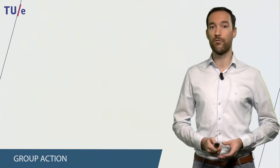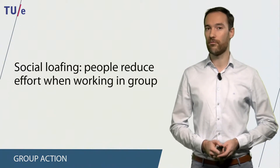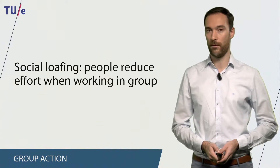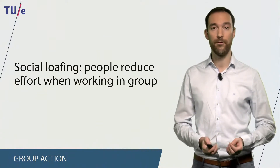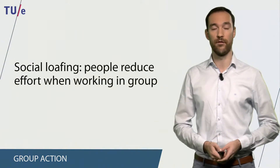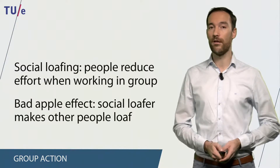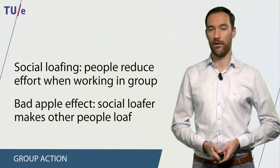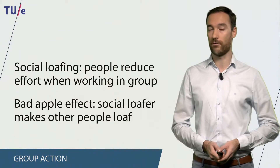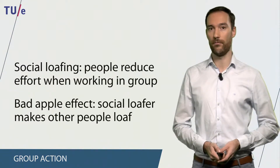Another theory that explains group behavior is social loafing. This means that people tend to reduce their effort when they are working in a group. So when you are doing a task by yourself, you are more likely to put in more effort compared to when you are doing it together with other people. Social loafing could lead to the bad apple effect, which essentially means that if you have one social loafer in a group, the group is more likely to have other social loafers as well.